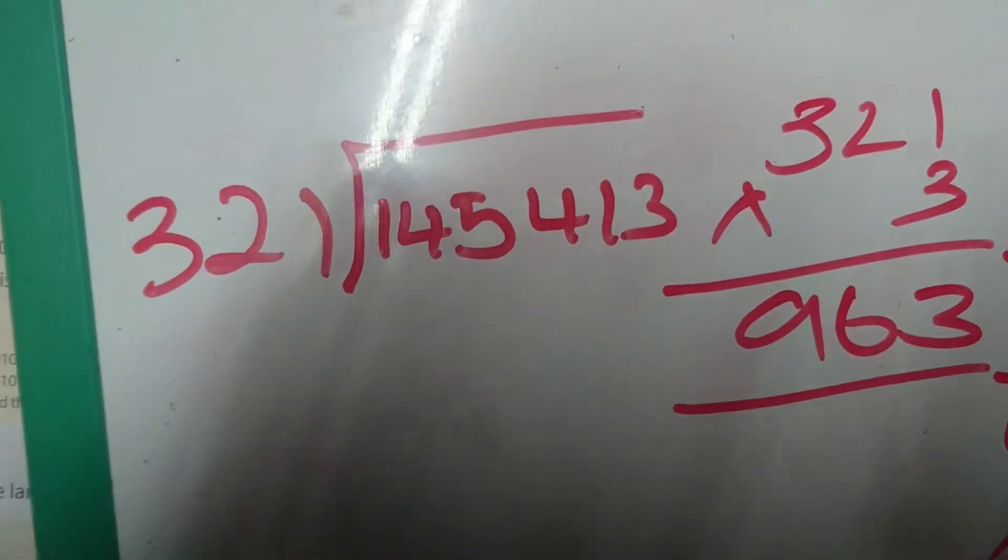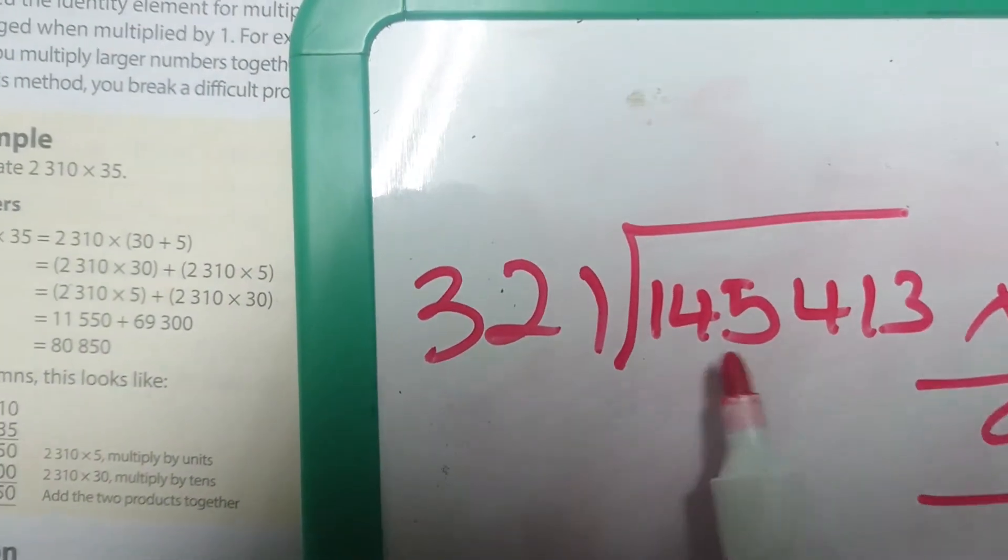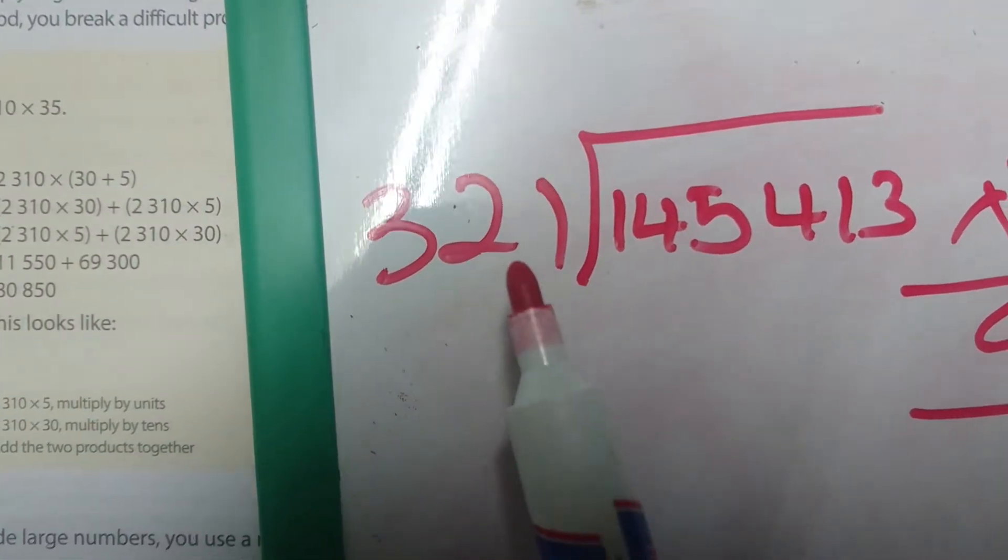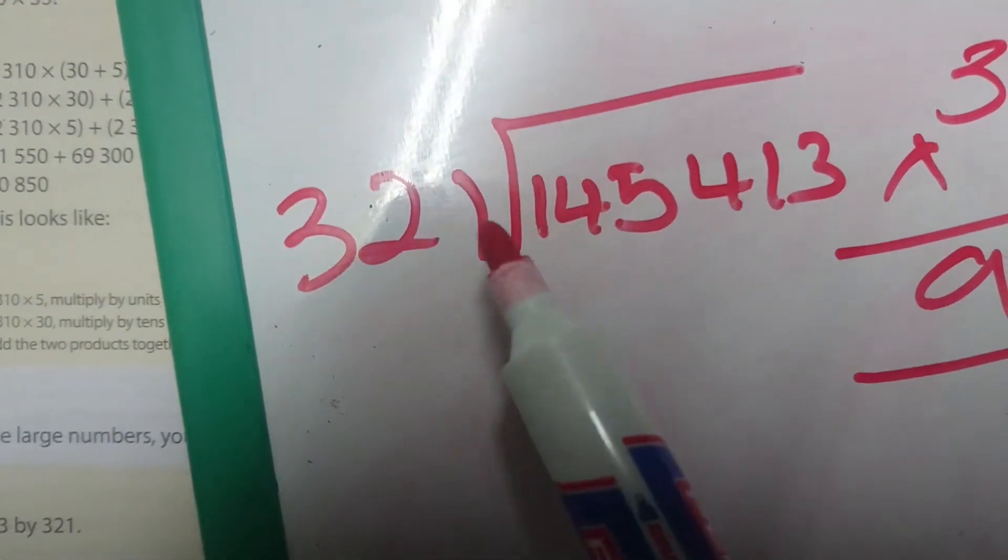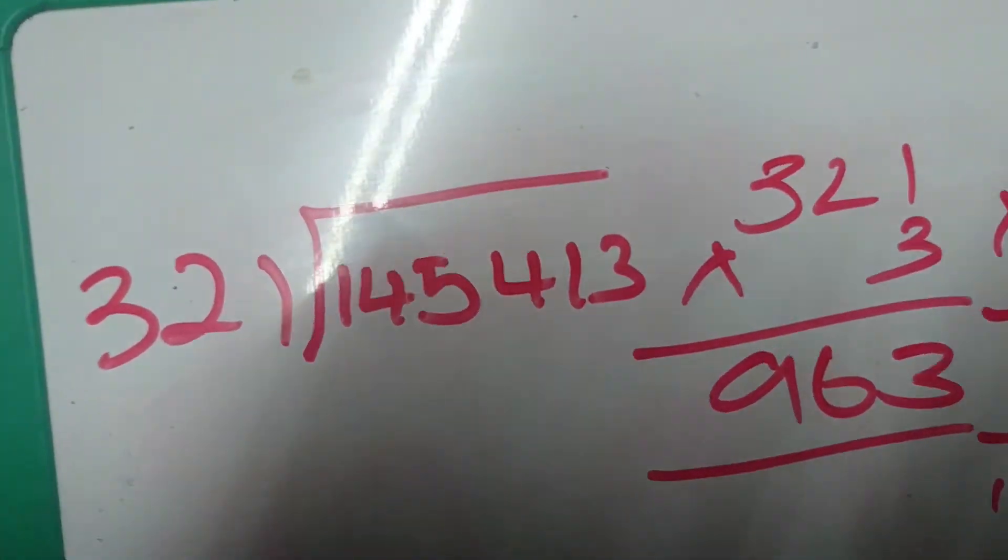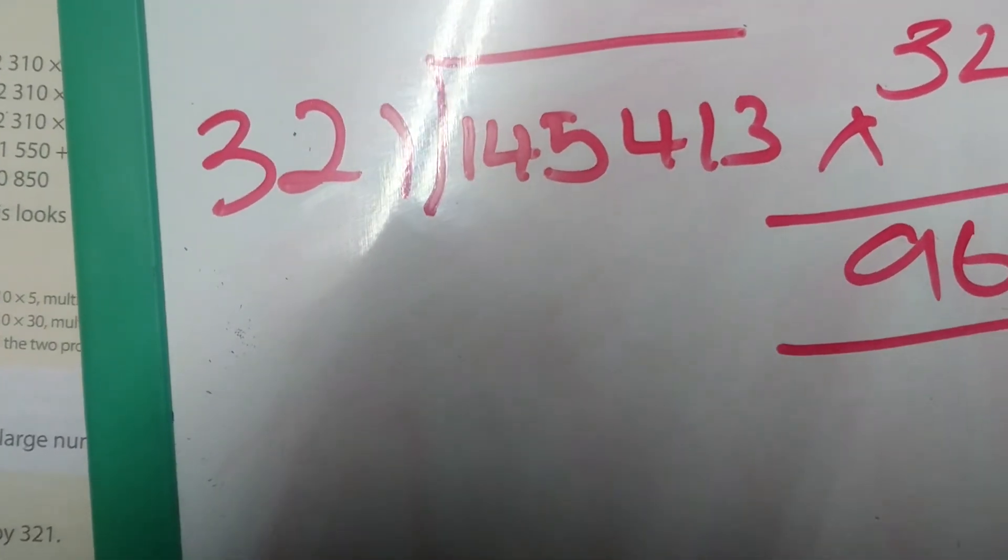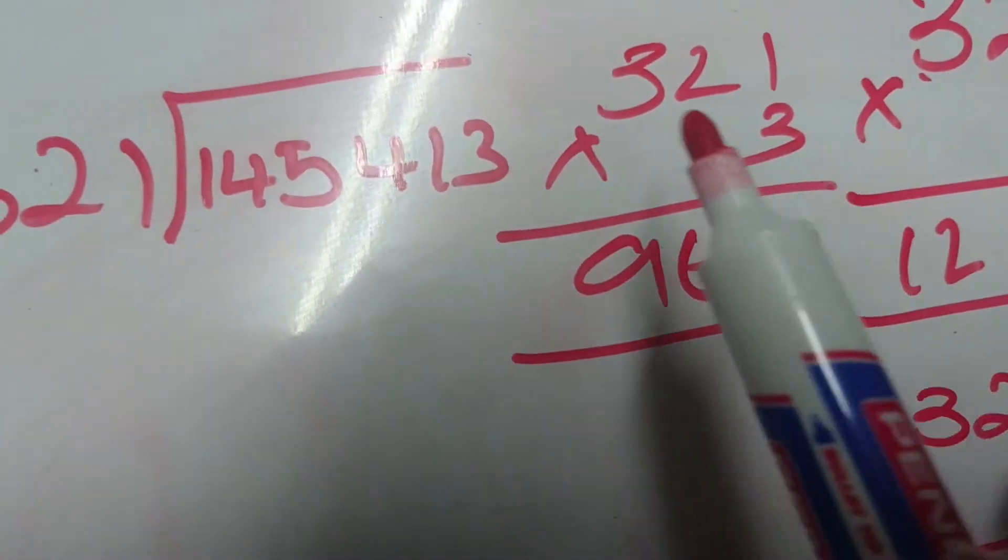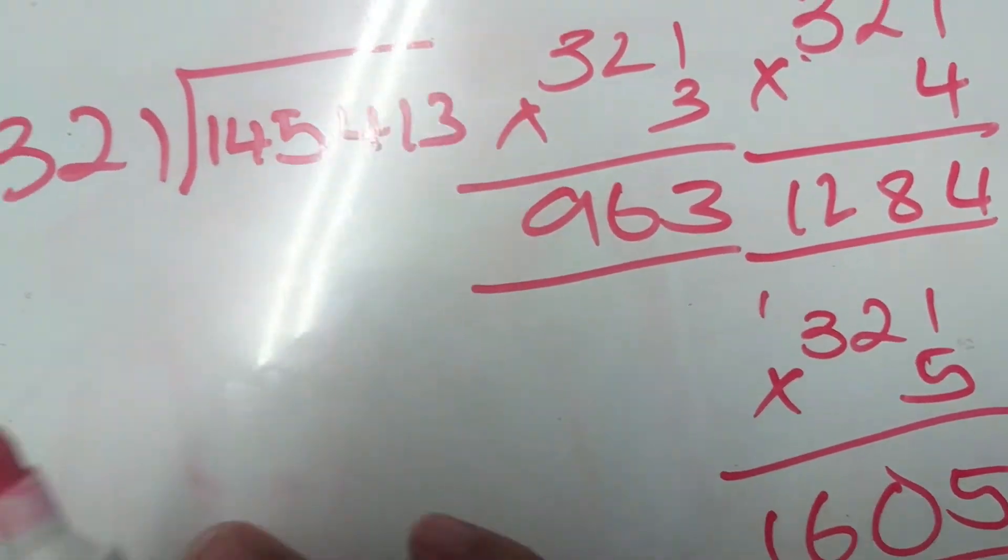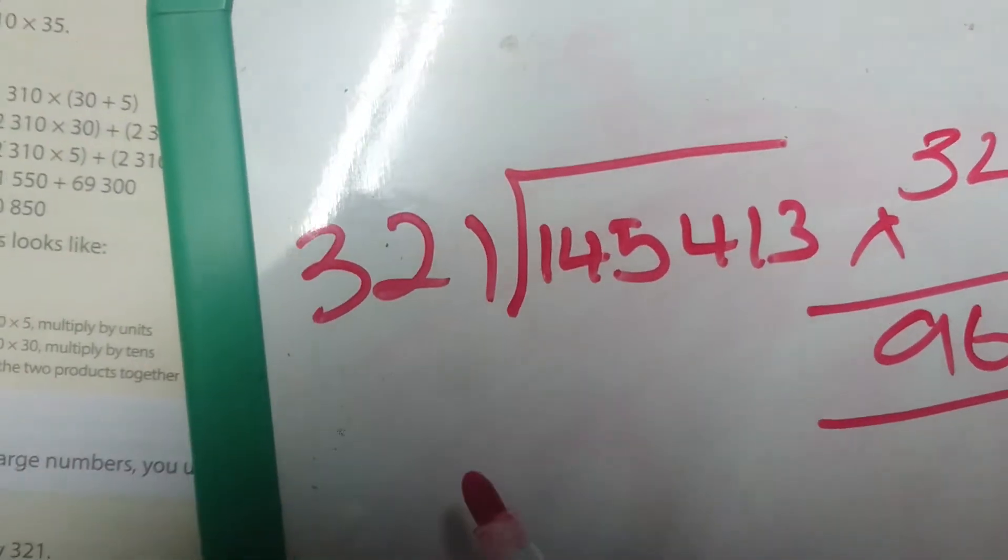The next example we are going to be looking at is division in your textbook. It says divide 145,413 by 321. So that actually means how many times can 321 go into this number here. I don't know if you guys remember from last year, we did a division board where we said 321 times 1, times 2, times 3, times 4, and times 5 just to find out the factors of that number. I'm going to show you how it works.